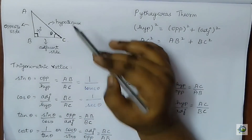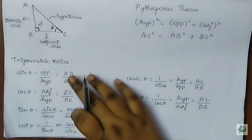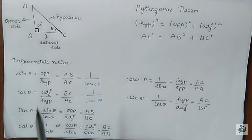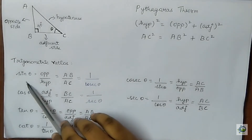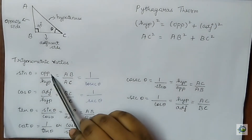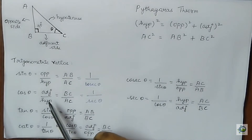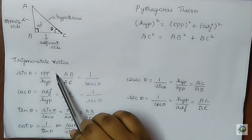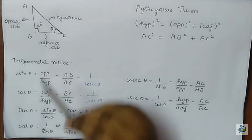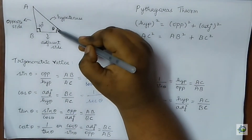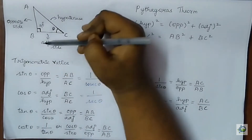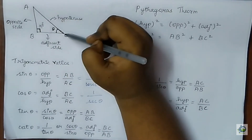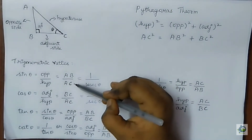Based on this, we are going to write the trigonometric ratios. There are six trigonometric ratios which you need to know very importantly. Firstly, sin theta is opposite by hypotenuse — written as opposite side by hypotenuse side. In this triangle, for angle theta, the opposite side is AB and the hypotenuse is AC, so sin theta equals AB by AC.